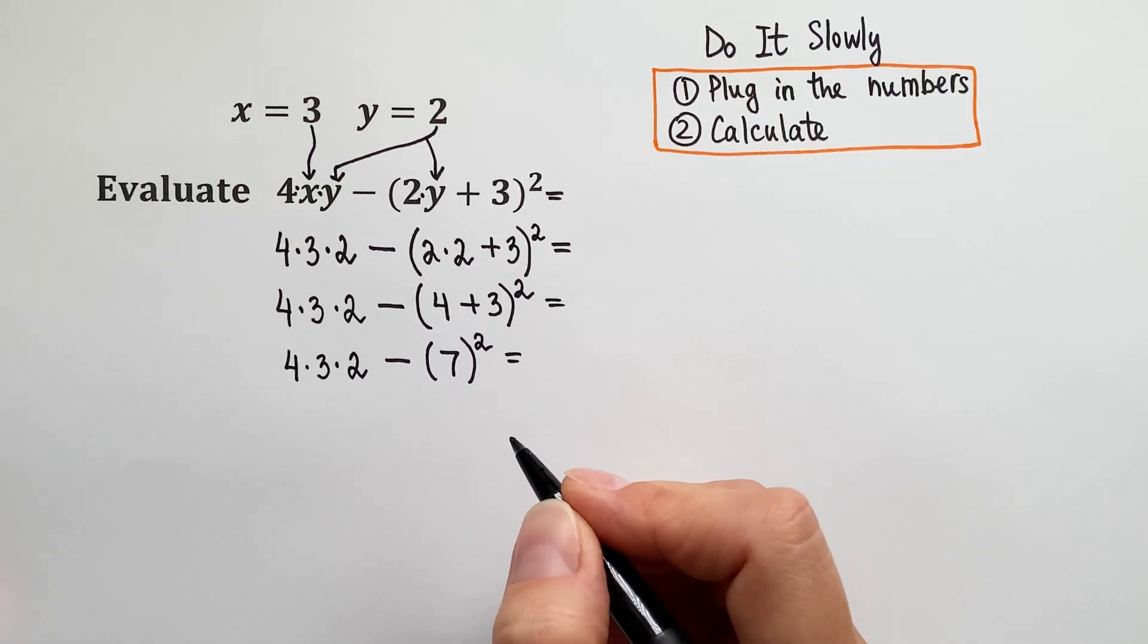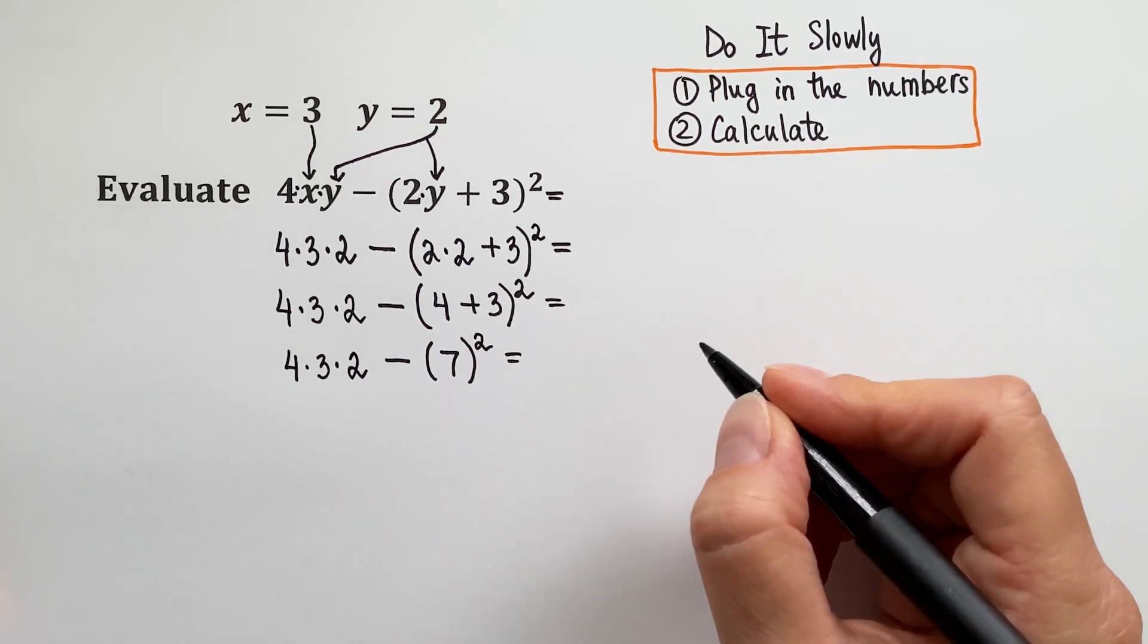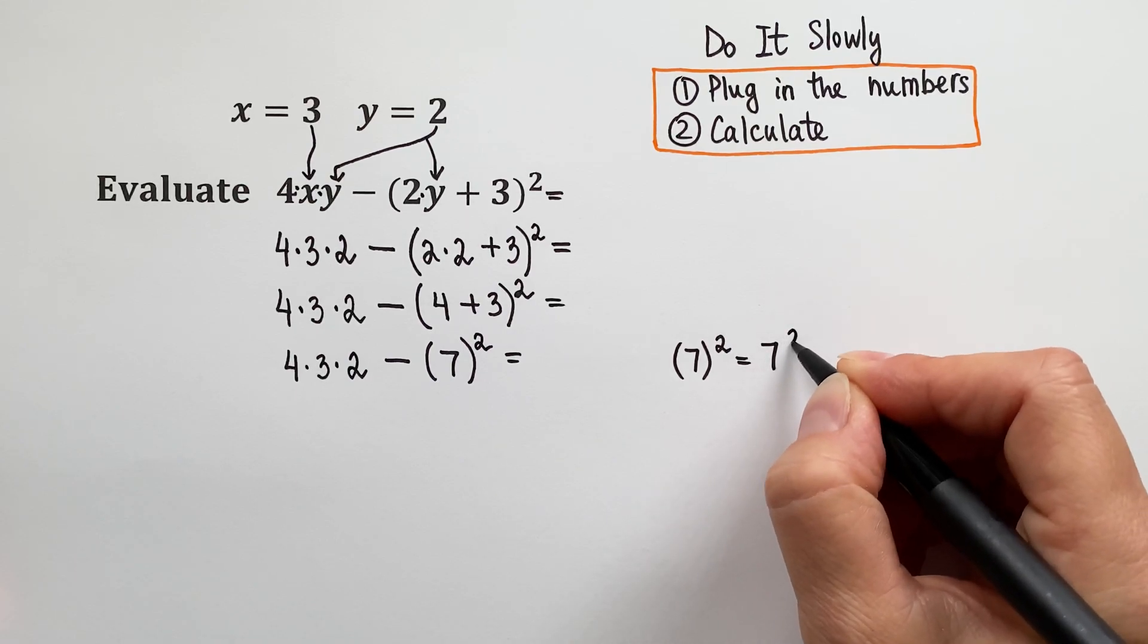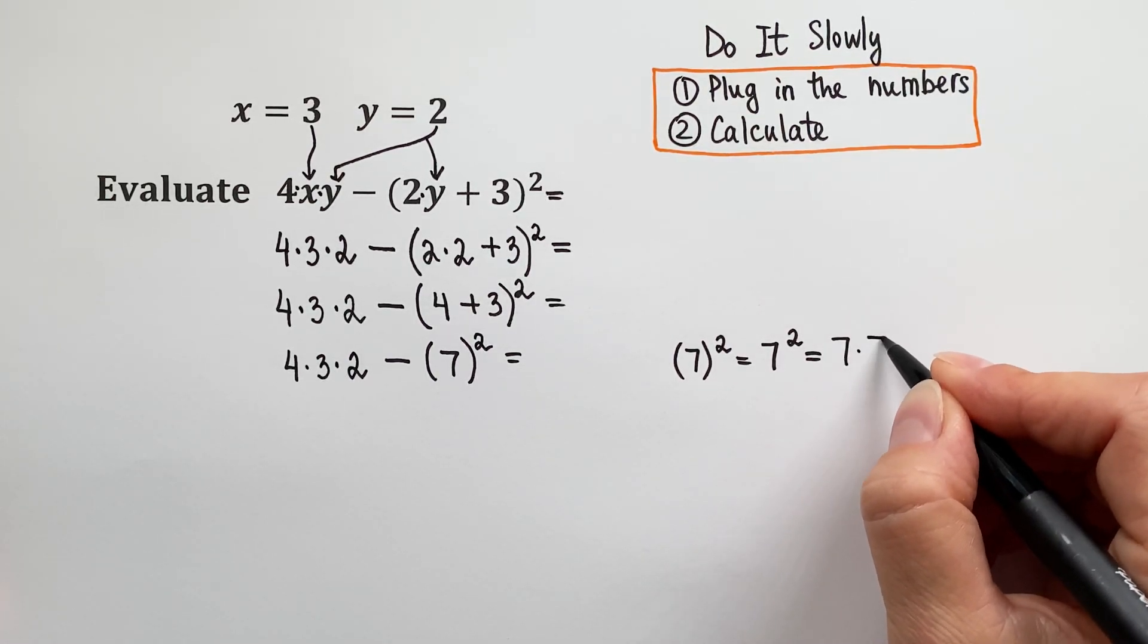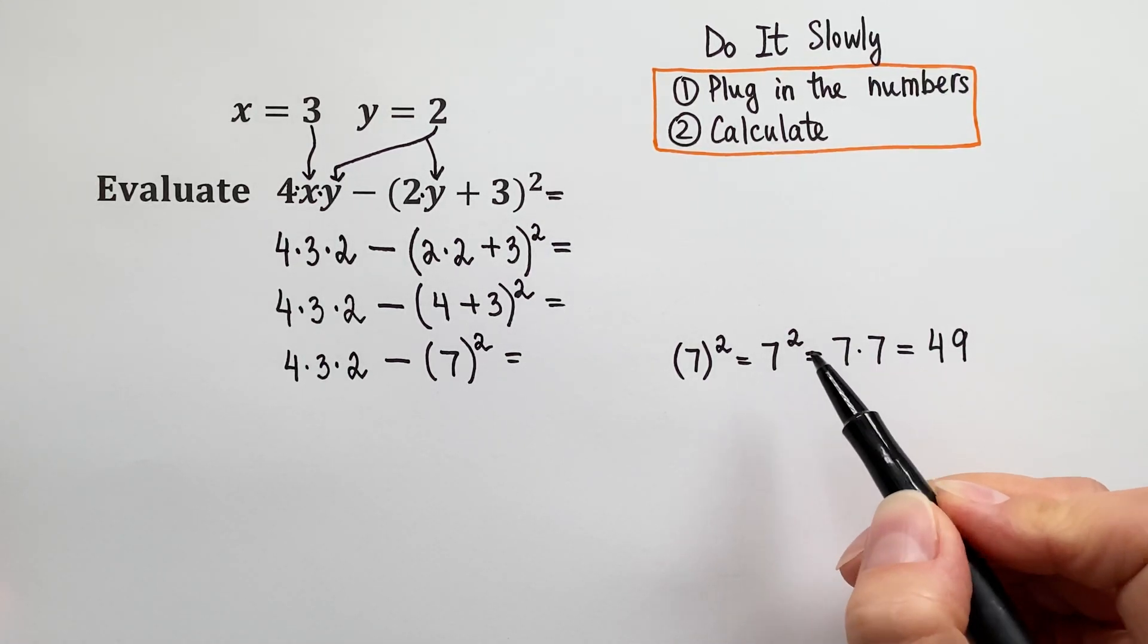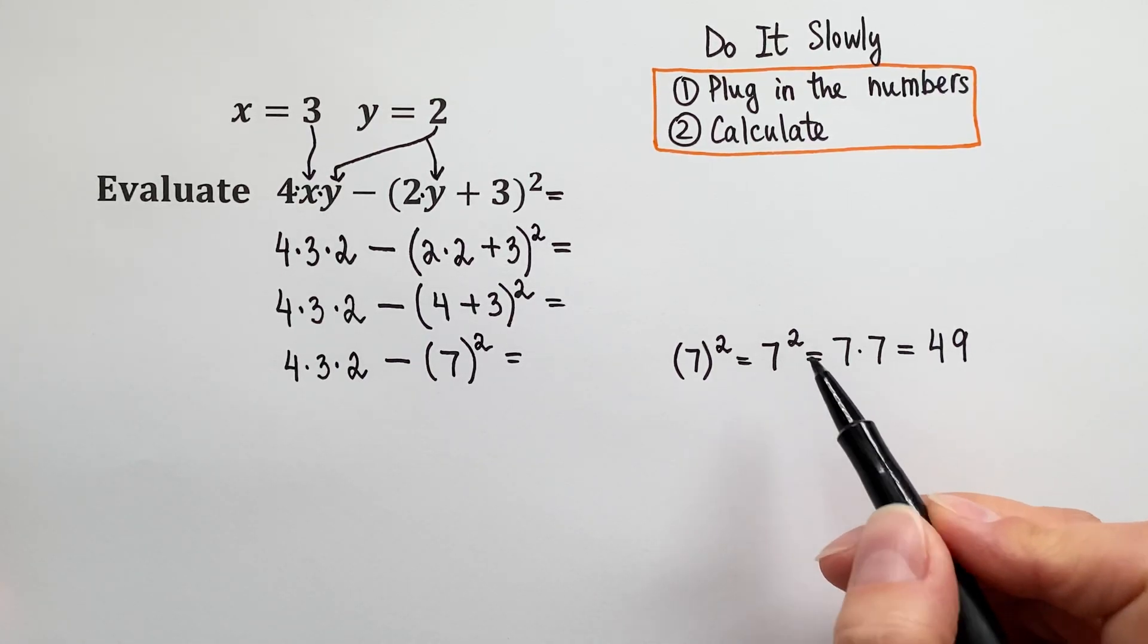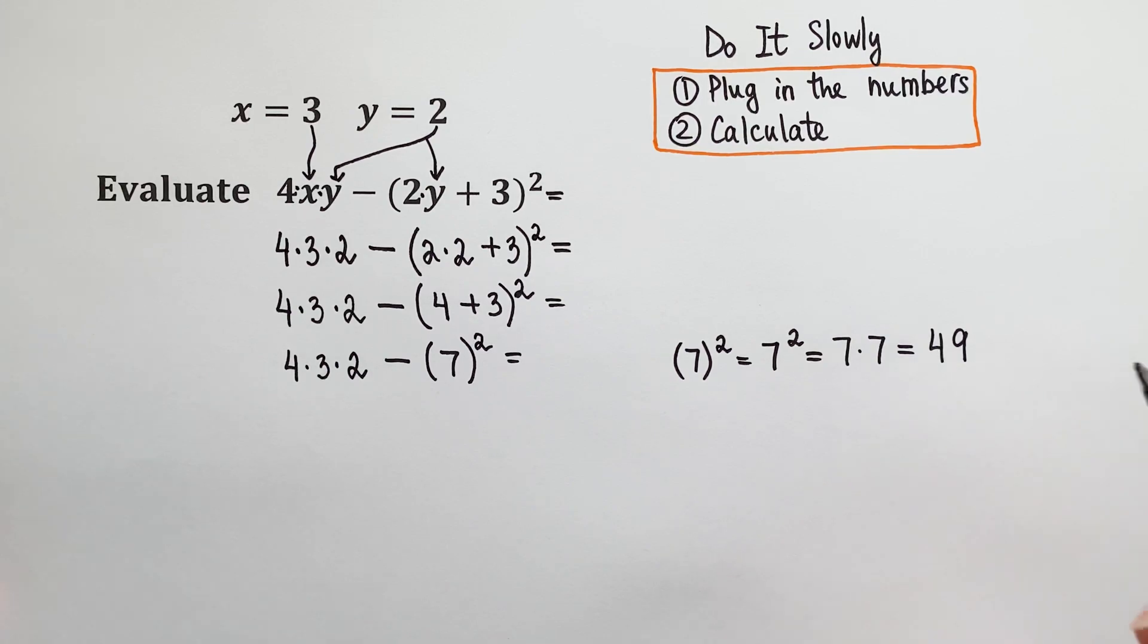What do we do next? That's right, we must take care of this exponent. We have 7 squared, and we don't need parenthesis because 7 is positive. So we can write it as 7 squared. 7 squared means 7 times 7, which is 49. Be careful when you see 7 squared. Do not accidentally multiply 7 by 2 because it is not correct. 7 squared means 7 times 7, which is 49.